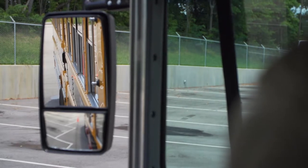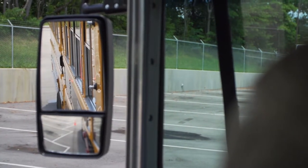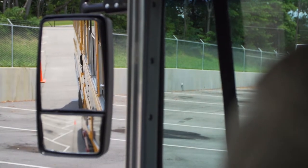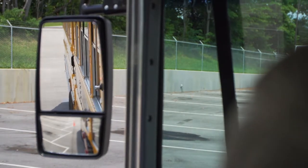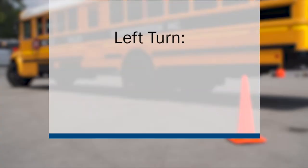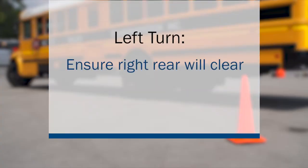Next, ensure the mirrors are adjusted properly. Begin with the driver side mirror. If you can see the windows on the side of the bus, the mirrors need to be pushed out. You can see how the cone comes in and out of view. When making a left turn, remember to ensure that the right rear of your bus will adequately clear vehicles, pedestrians, and objects which are on your right side as you begin the turn.